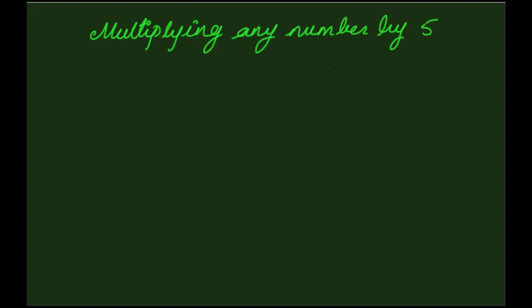Let's learn the trick which is helpful in performing multiplication of any number by 5. To multiply any number by 5, always remember that 5 is equal to 10 divided by 2. This means that while multiplying any number by 5, first multiply the given number by 10 and then half it.